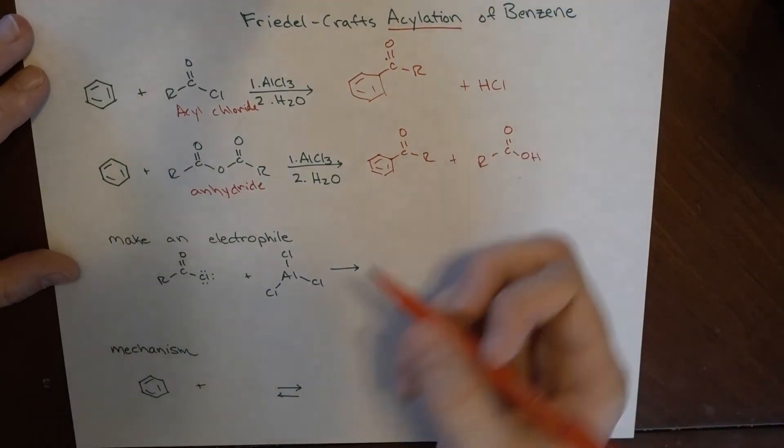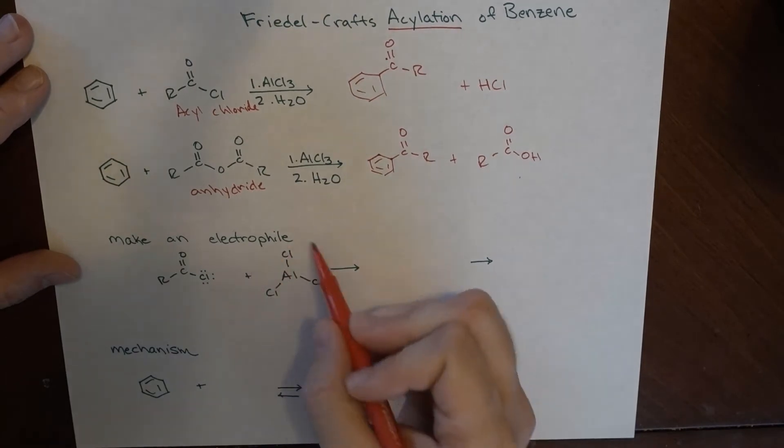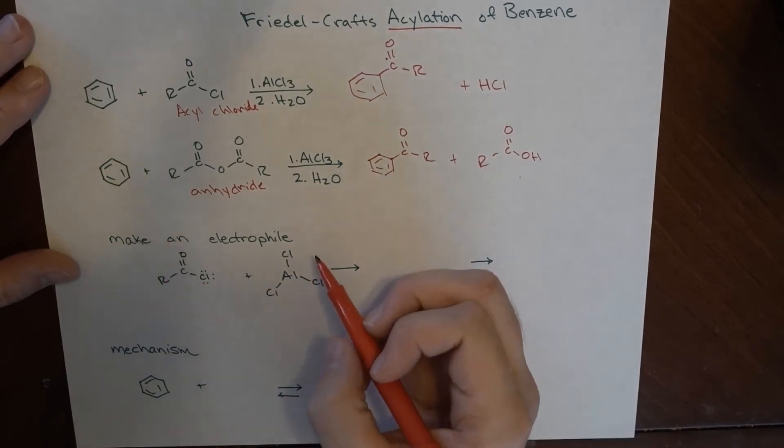What we use here is AlCl3. That's a really good Lewis acid. So if you drew the Lewis structure for this, you would find out that aluminum does not have its own filled octet.